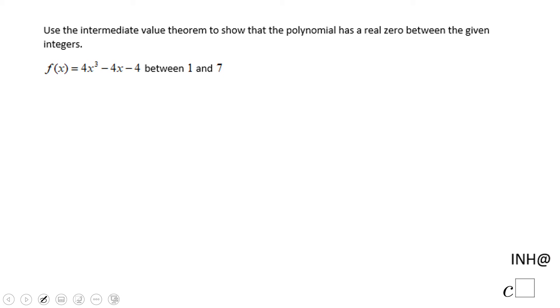Welcome to INeedHelpAtCSquared. In this problem we have a polynomial function and we are asked to use the Intermediate Value Theorem to show that the polynomial has a real zero between 1 and 7.